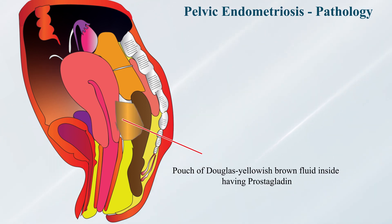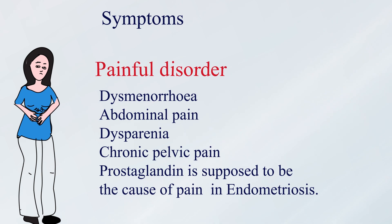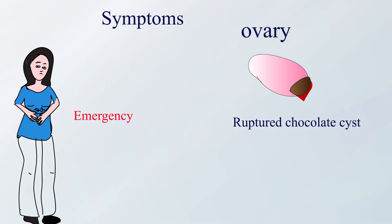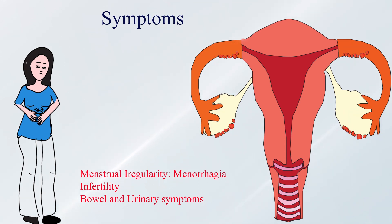Yellow-brown fluid is seen in the cul-de-sac containing prostaglandins, and because of inflammation, raised chemical mediators are seen. Endometriosis is a painful disorder; pain presents as dysmenorrhea, abdominal pain, dyspareunia, and chronic pelvic pain. Occasionally pain suddenly becomes very severe, presenting as acute abdomen due to a ruptured chocolate cyst, which is a surgical emergency. Bleeding from ectopic sites usually presents as menorrhagia, and later causes adhesions. When in tubes, it interferes with tubal motility and function; when in ovaries, it can inhibit ovulation leading to infertility. Urological and bowel symptoms are present according to the sites involved.